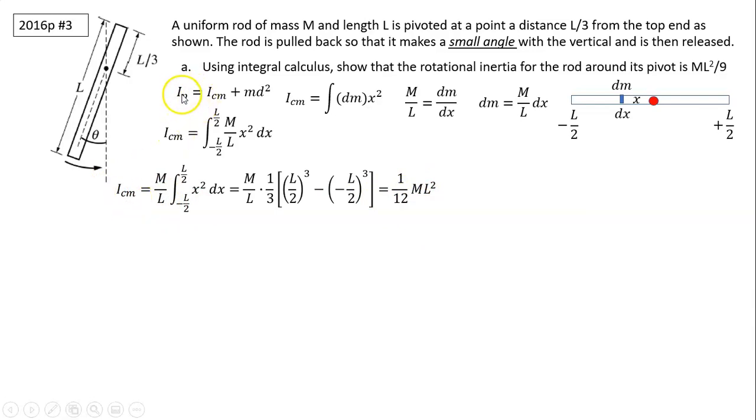But that is just I center. We have to find Ip. Ip equals I center plus md squared. In this case d is from the center to the pivot. So here is the center. Here is the pivot. And the distance between them is d. How far is between the center to the pivot? That's l over 2 minus l over 3. Because from here to the top is l over 2. From pivot to the top is l over 3. d equals l over 6. Plug that in. Ip equals to 1 twelfth ml squared. That's I center plus m d squared. d is l over 6. So 1 twelfth plus 1 over 36 is 1 ninth ml squared. And that's how you find Ip.